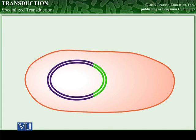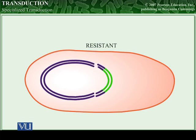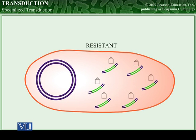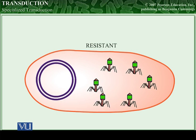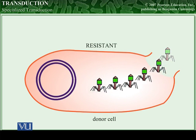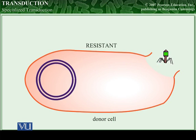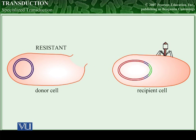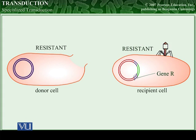Specialized transduction can be used to transfer antibiotic resistance from one bacterium to another. The donor bacterial cell has a resistance gene called R. As the prophage is excised from the donor cell, it takes the R gene with it. Copies of this DNA are made and packaged into phage particles. When one of these phages infects a recipient cell that is not resistant, the R gene is transferred to the recipient's chromosome, and the cell becomes antibiotic resistant due to acquisition and expression of the R gene.